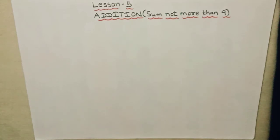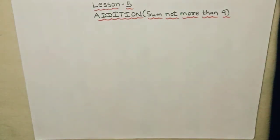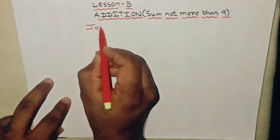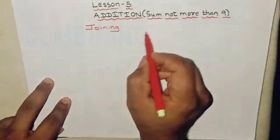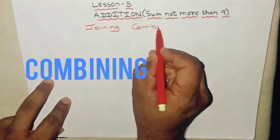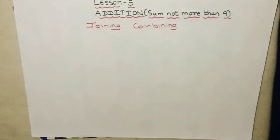Hello kids, welcome back to Learn with Maktoum. In the last video of mathematics we finished lesson number four. Today we are going to start with lesson number five: addition. So what is addition? Addition is joining, addition is combining. Let's see an example of how to add.